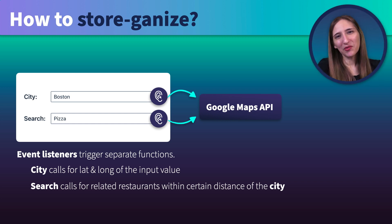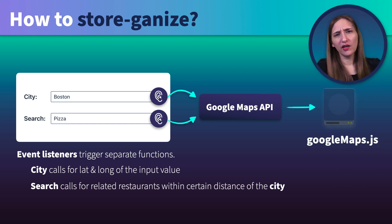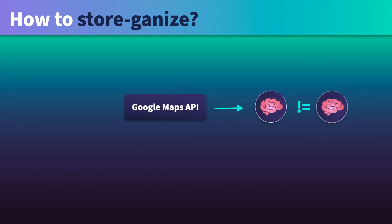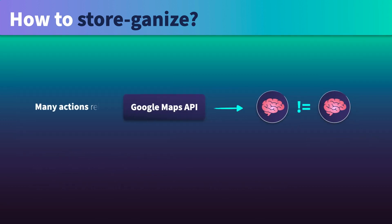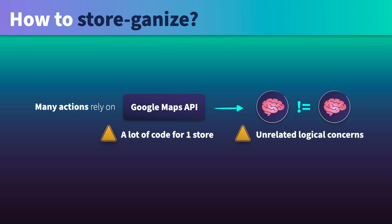So should they be combined within the same store — a Google Maps store, perhaps? While there are quite a few actions in this project that rely on the Google Maps API, that's a lot of code in just one store. And more importantly, the actions aren't all related to the same logical concerns.